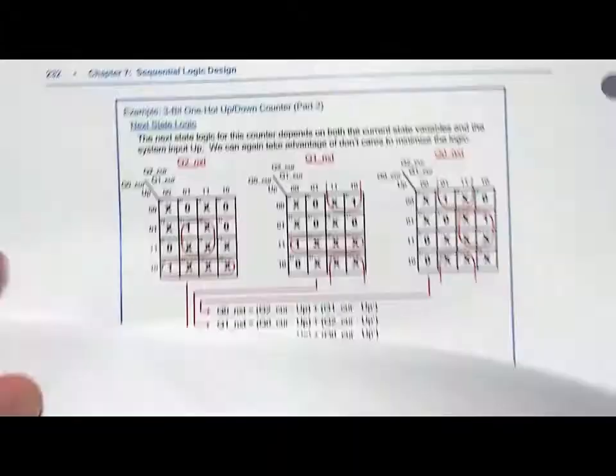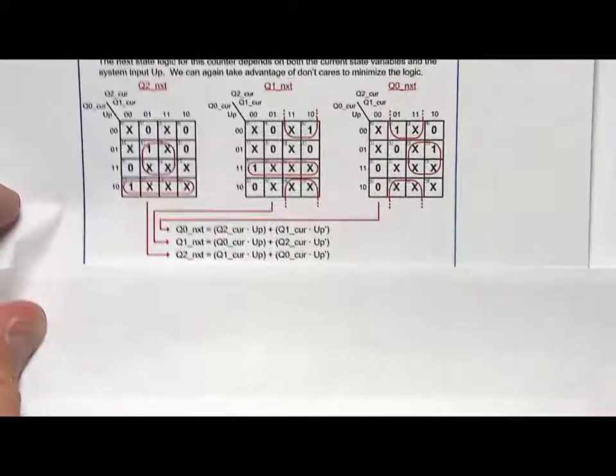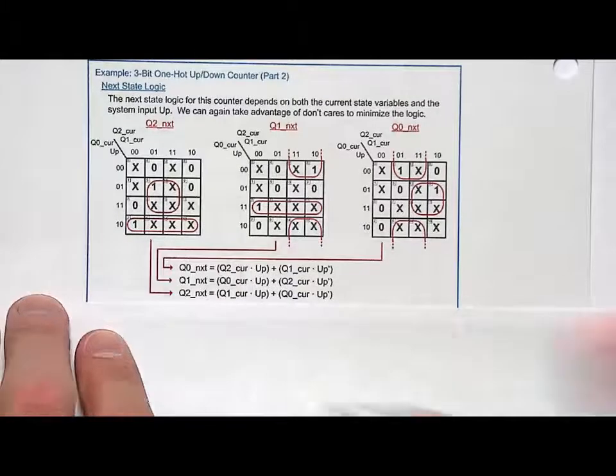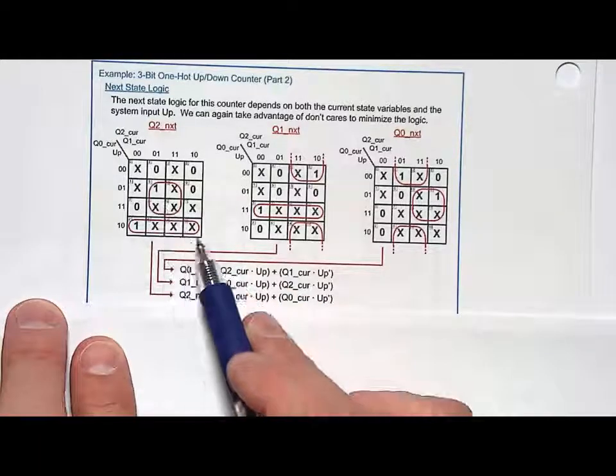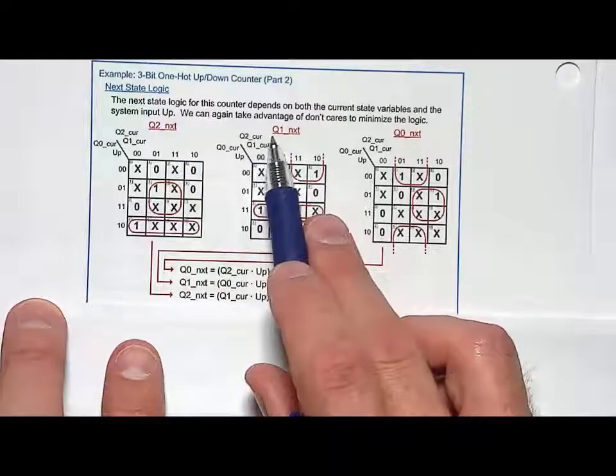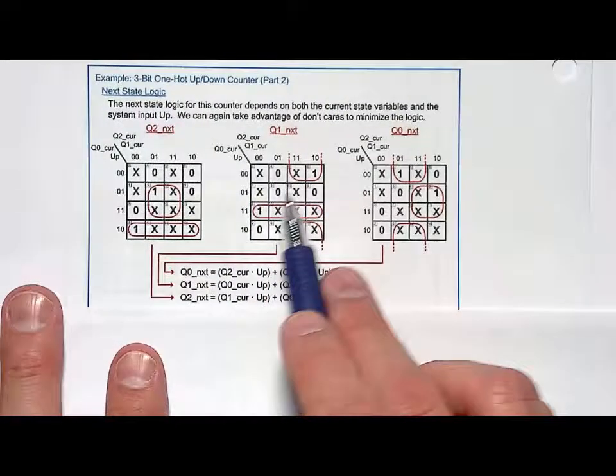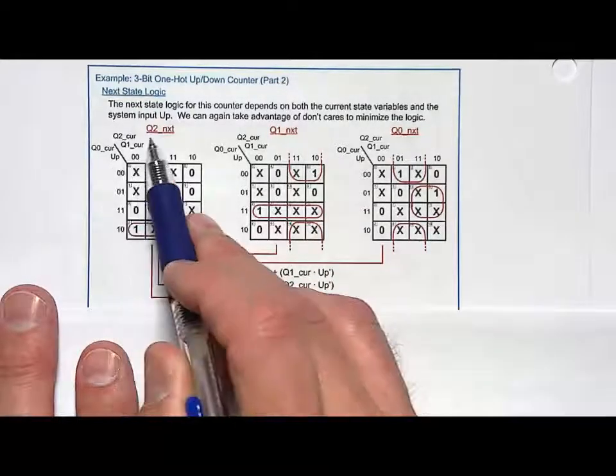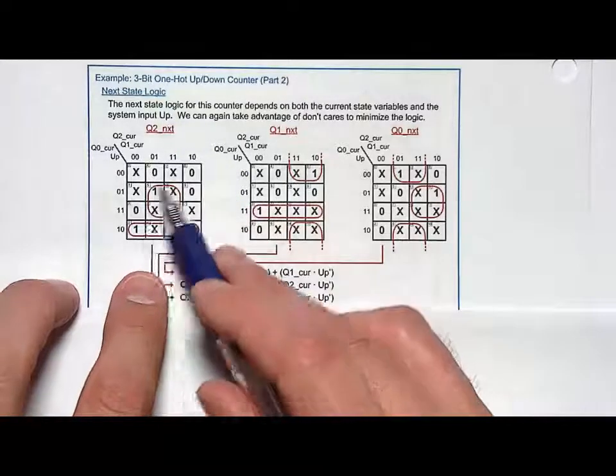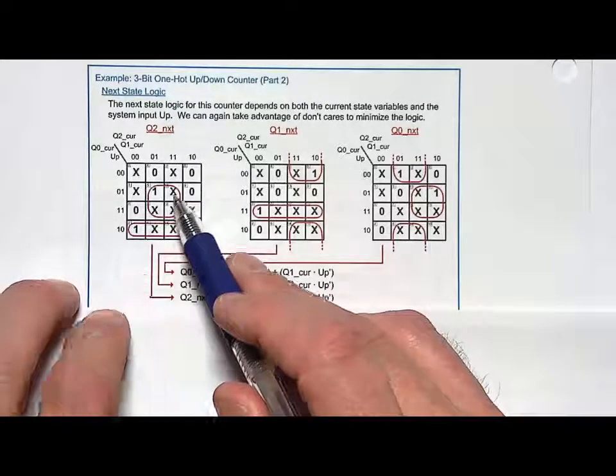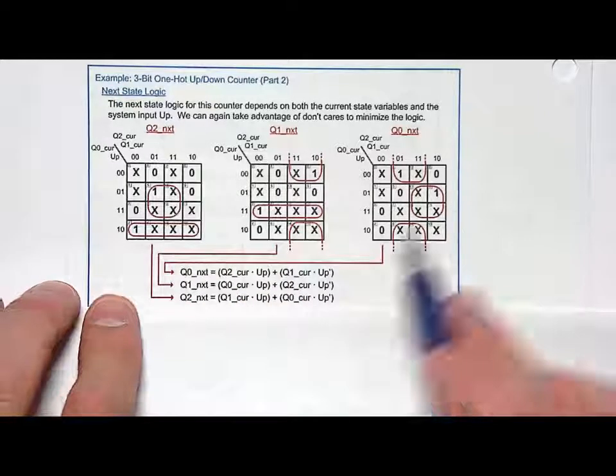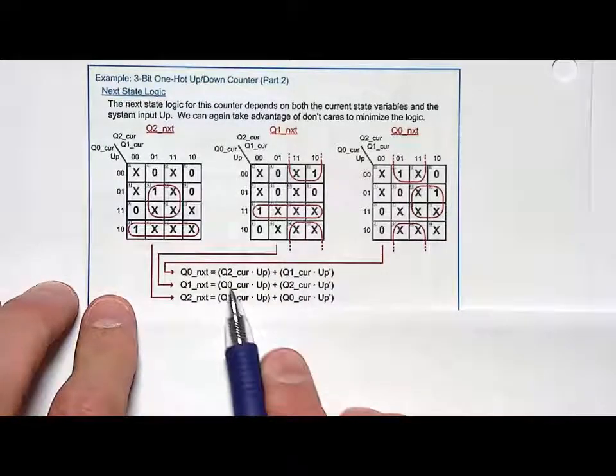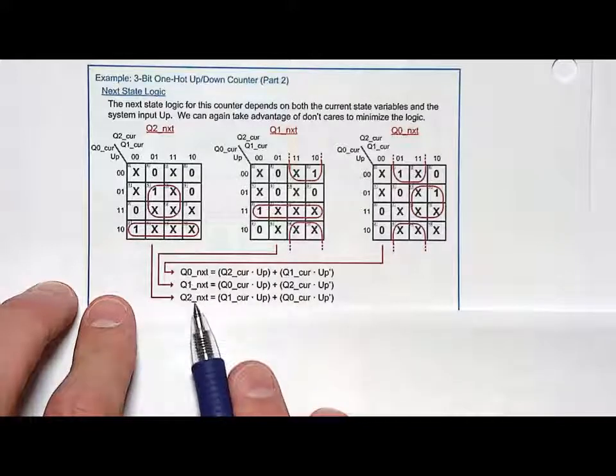So we come along, and here's what we get. I come in here, and I put those values, Q2next, into the K-map. Notice that I have a whole bunch of don't cares. I put Q1next values into the K-map. Notice I have a bunch of don't cares. Same thing with Q0next, a bunch of don't cares. And then I have Q2cur, Q1cur, Q0cur, and UP as the inputs. So for these logic expressions, I take advantage of the don't cares, and I form a sum of products logic expression for all three. I come up with a reasonably small circuit here for Q0next, Q1next, and Q2next.